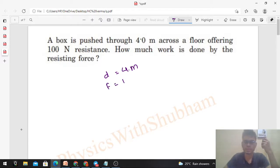And force is given, hundred Newtons. So what is work done? Force dot displacement. So you have to take the dot product of force with displacement: F d cos theta. So F will be hundred, displacement will be four meters.